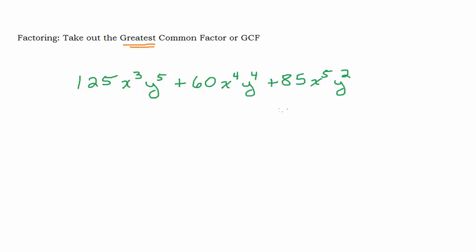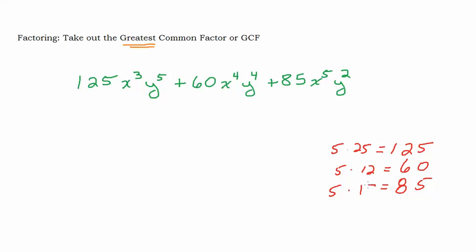You're basically looking at this in little pieces. The coefficients we have are 125, 60, and 85. We need the greatest common factor of these three numbers. I can see 5 goes into all of them: 125 is 5 times 25, 60 is 5 times 12, and 85 is 5 times 17. They all share a common factor of 5. And 25, 12, and 17 don't share any common factors — in fact, 17 is prime. So 5 is the biggest number that goes into all three, and I'll put my 5 out front.